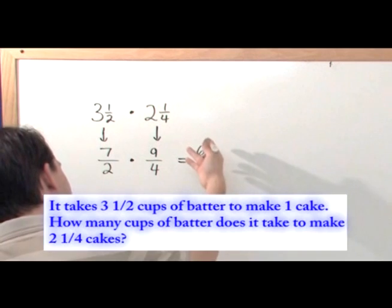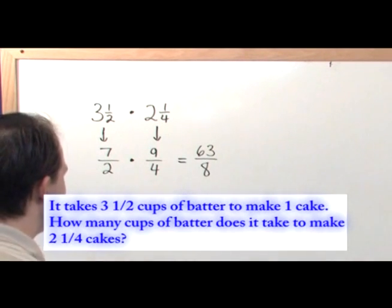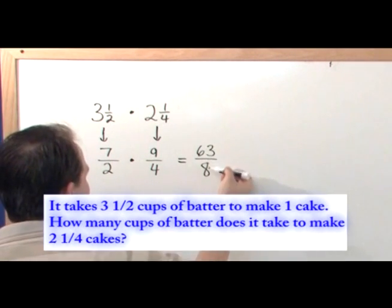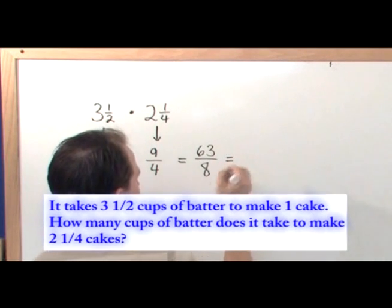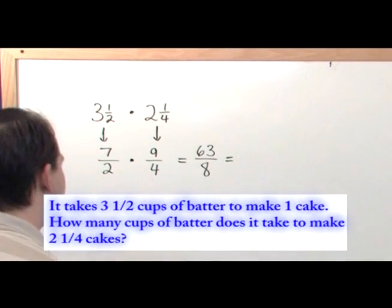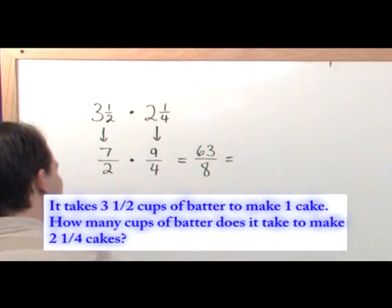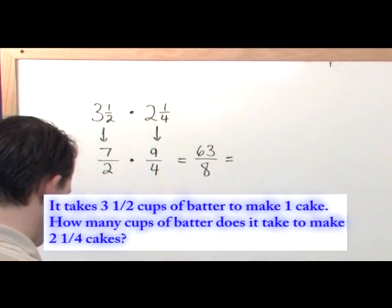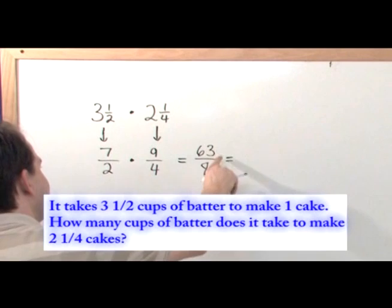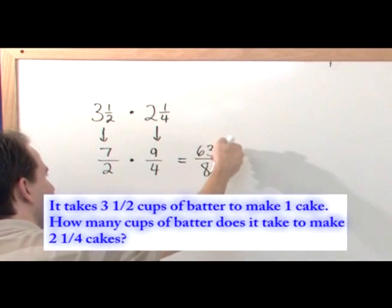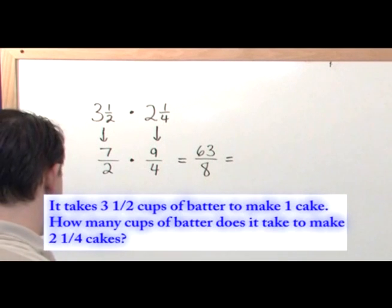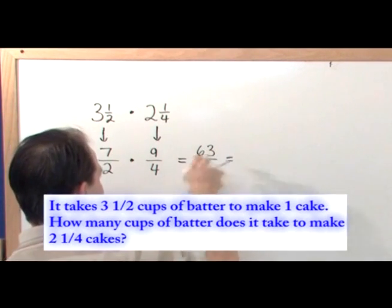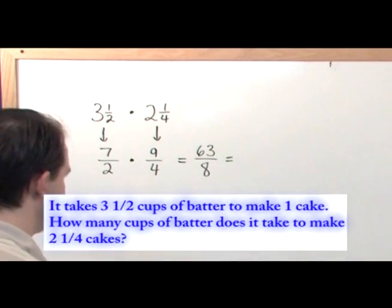But you see, 63 over eight doesn't really tell you much. And it's because you've got this giant number on top and this little bitty number on the bottom. So you're always going to want to convert this back to a mixed fraction if you have a bigger number on top. So let me ask you a question. Since a fraction really is division, this is really 63 divided by eight. How many times does it go in there? Eight times what will give you 63 or close to 63?